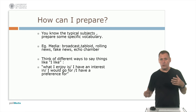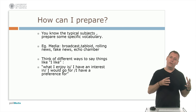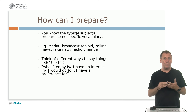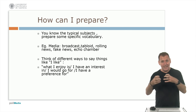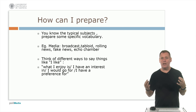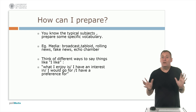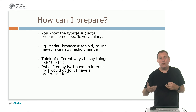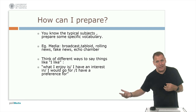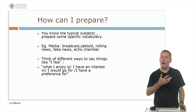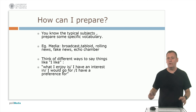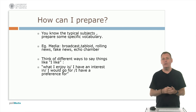You're going to talk about likes and dislikes, things you'd like to do in the future — think about the grammar and vocabulary you need and variety to express these things. So if you just say 'I like', that's good English, but you could say 'What I enjoy is...', 'I have an interest in...', 'I would go for...', 'I have a preference for...' Think about variety in your language.